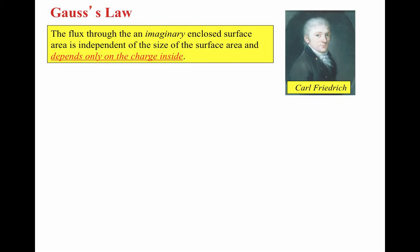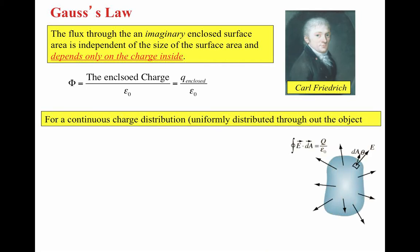Gauss realized that the flux through an imaginary closed surface is independent of the size of the surface area and depends only on the charge inside it. So if the charge is negative, Φ = −Q/ε₀, and if the charge is positive, Φ = Q/ε₀. To calculate the flux surrounding any charge, you just build an imaginary surface that encloses the charge — if you know the enclosed charge, you can calculate the electric flux.